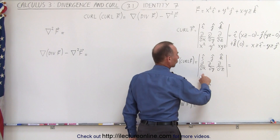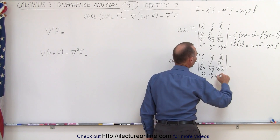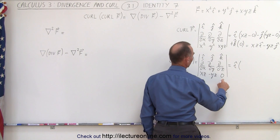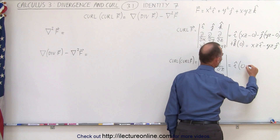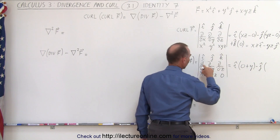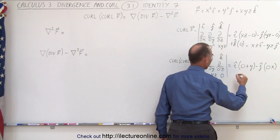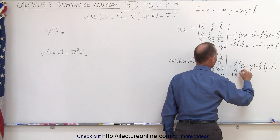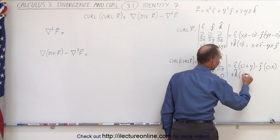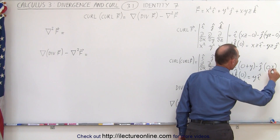So this becomes XZ in the I direction, minus YZ in the J direction, and no K component. Now let's take the curl of that. We get the I component: zero minus a minus Y, which gives plus Y. For the J component: the partial with respect to Z of XZ gives X, so we get minus X in the J direction. The K component gives the partial of this with respect to X minus the partial with respect to Y, which is a zero K component again.